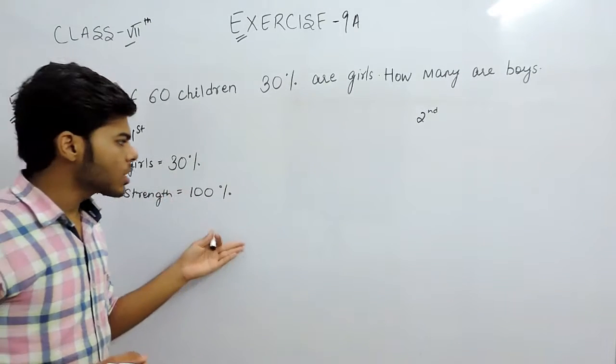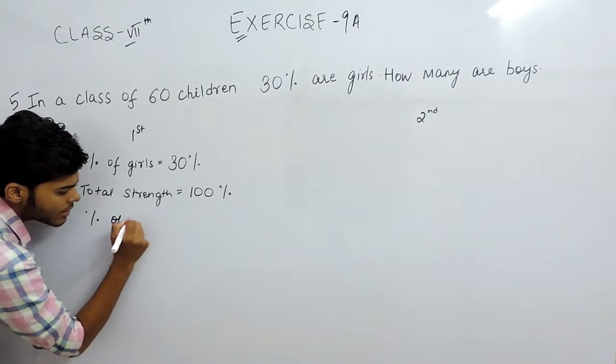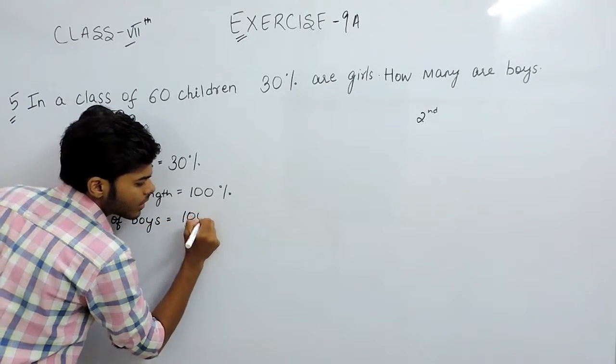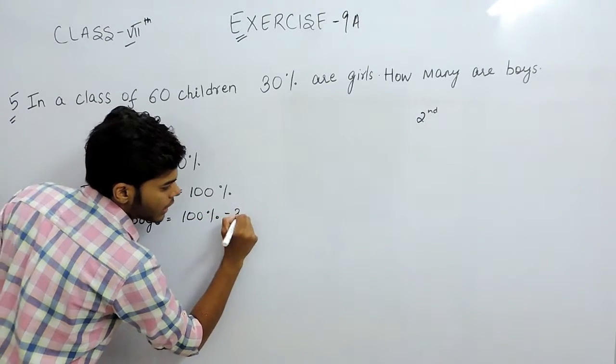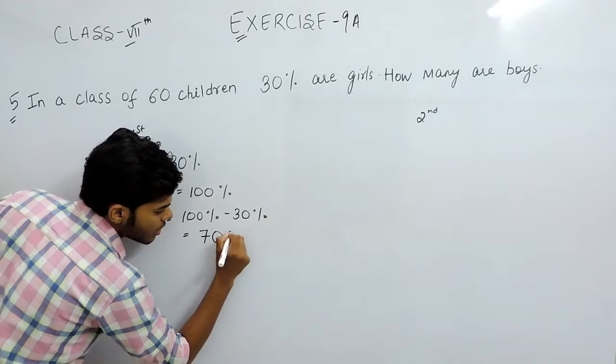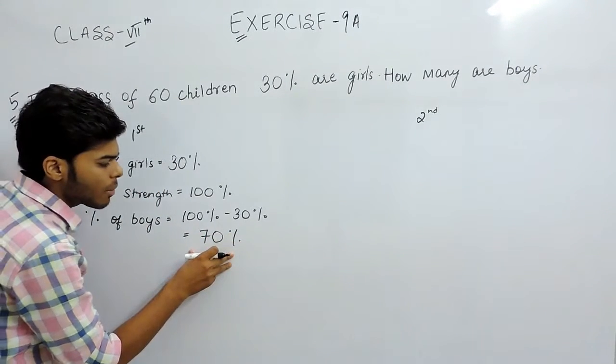Therefore, there must be either girls or boys in a particular class. The percentage of boys will be equal to 100% minus 30%, which is 70%. So in a particular class, 70% are boys.